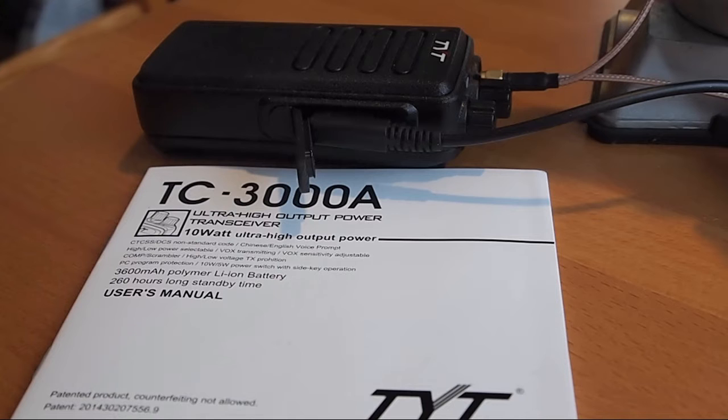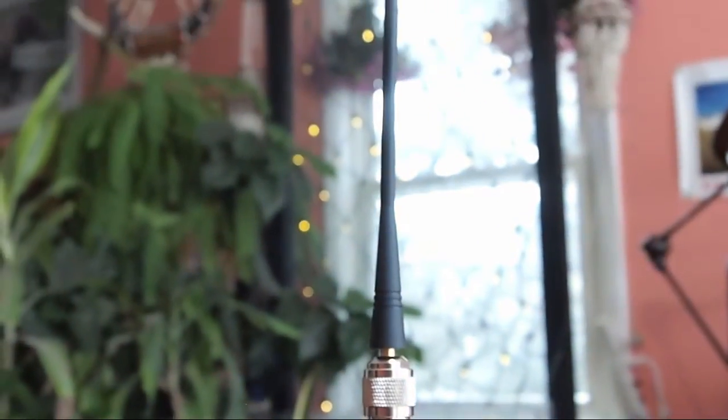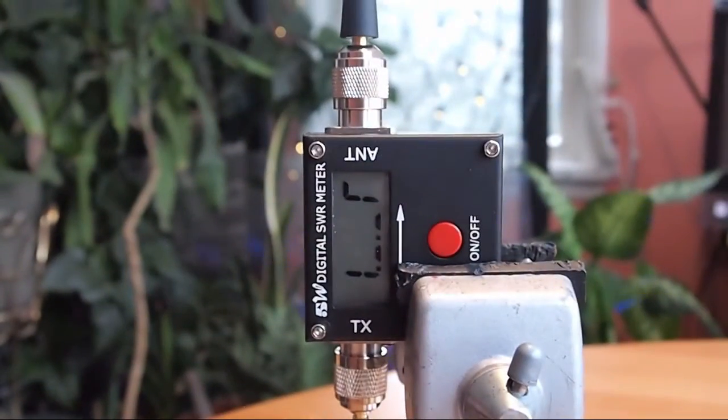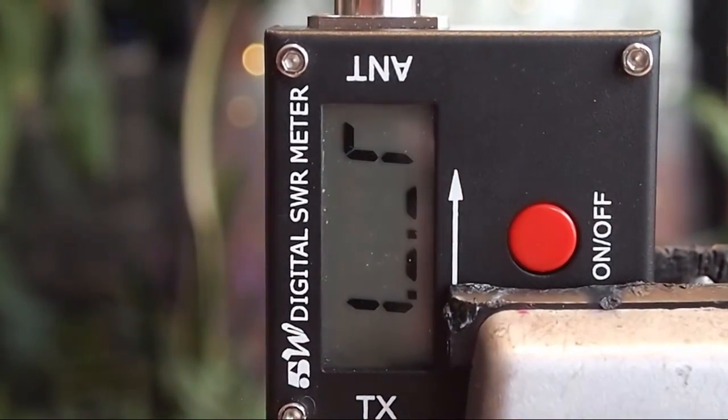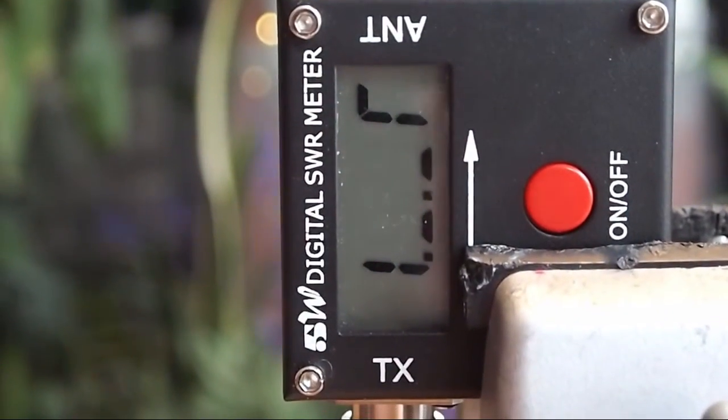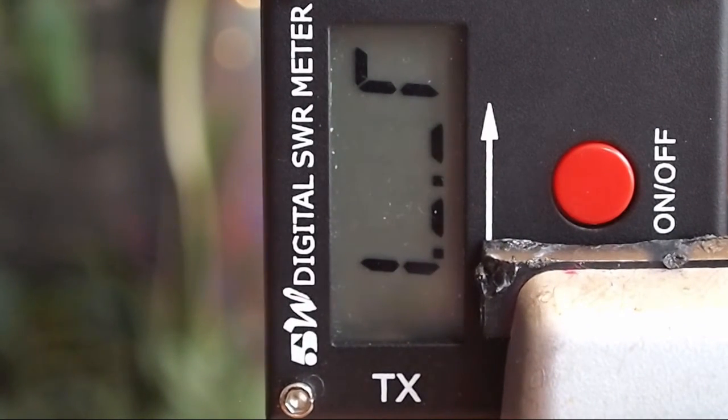So we're going to start with the factory antenna that comes with the radio and we're going to look first of all at the standing wave ratio. We're going to alternate between reading the standing wave on low power and then on high power. So we'll get started here now, and this frequency we're going to start with is 145 MHz. And it looks like we're about 1.4, we'll call that 1.5 on low power.